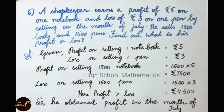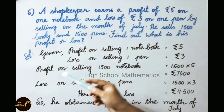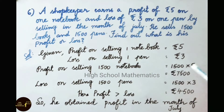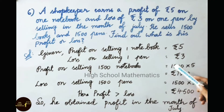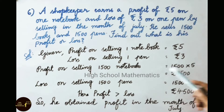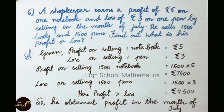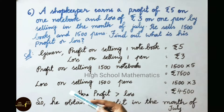Let us see the solution. Given: profit on selling one notebook is 5 rupees; loss on selling one pen is 3 rupees. Profit on selling 1500 notebooks equals 1500 into 5, that is 7500 rupees. Loss on selling 1500 pens equals 1500 into 3, that is 4500 rupees.